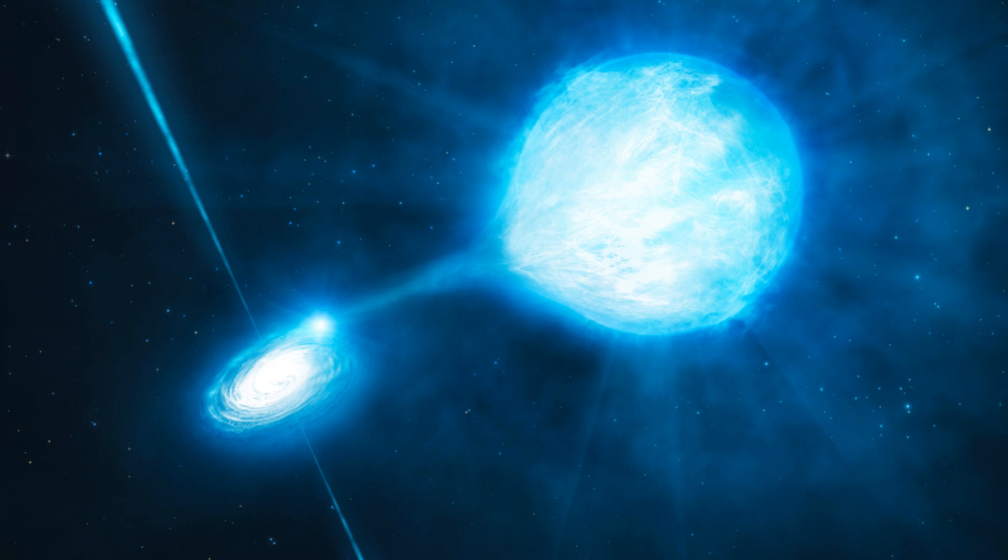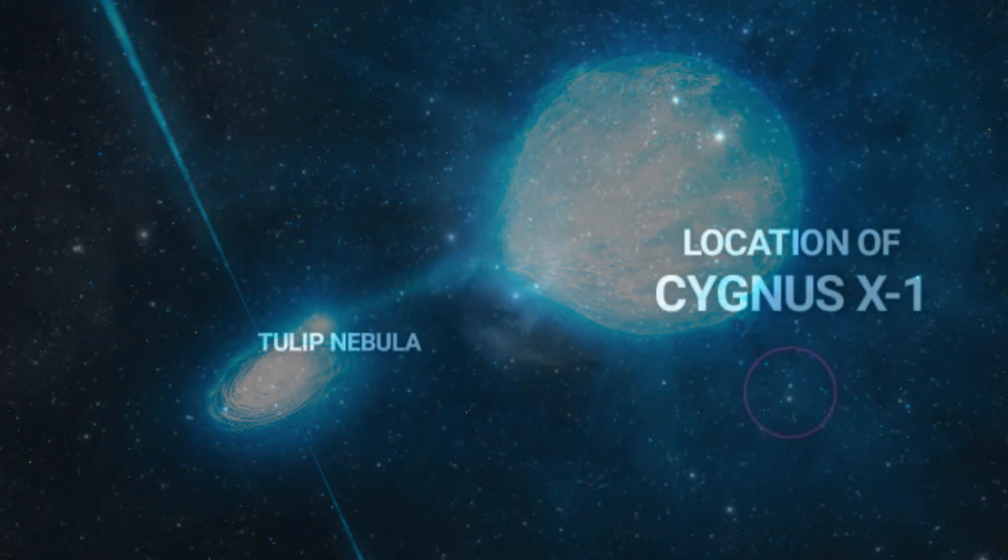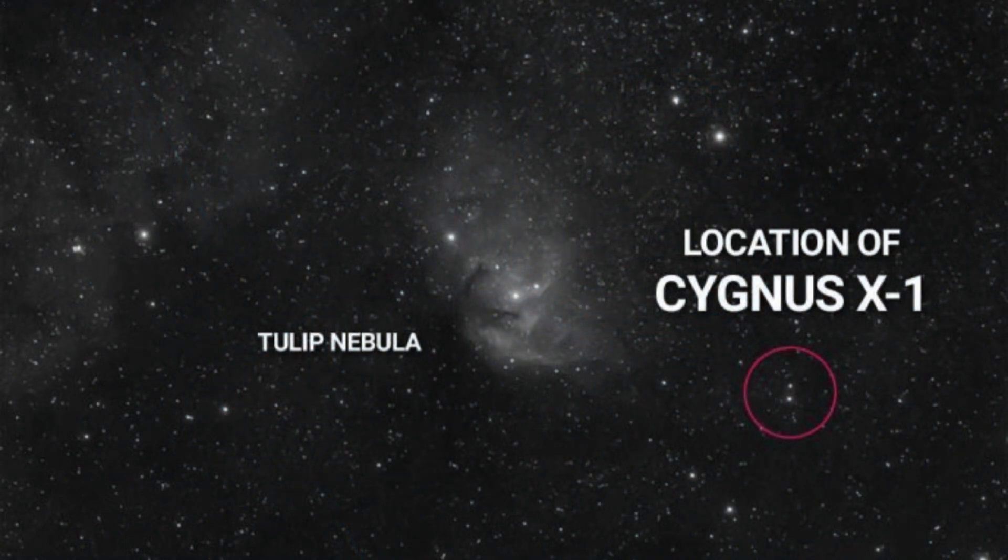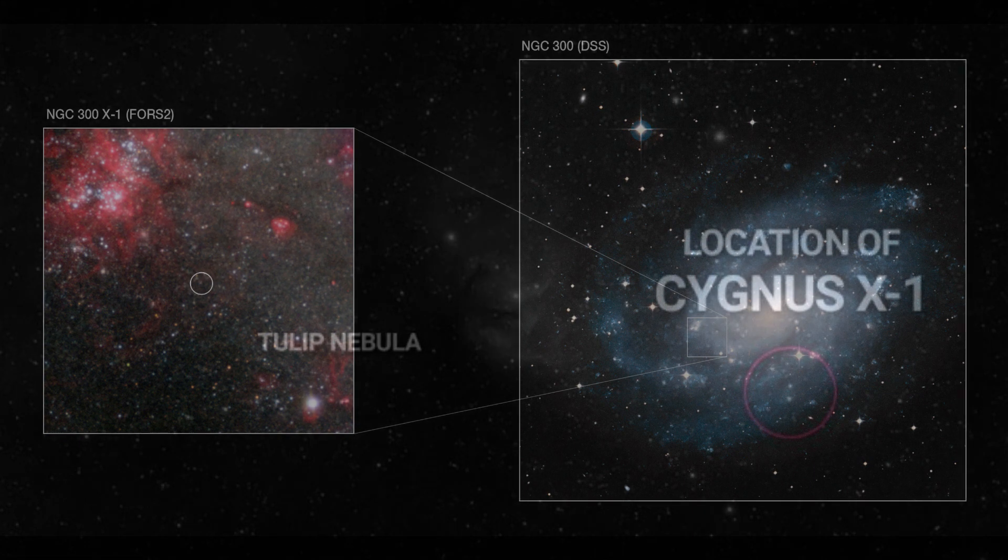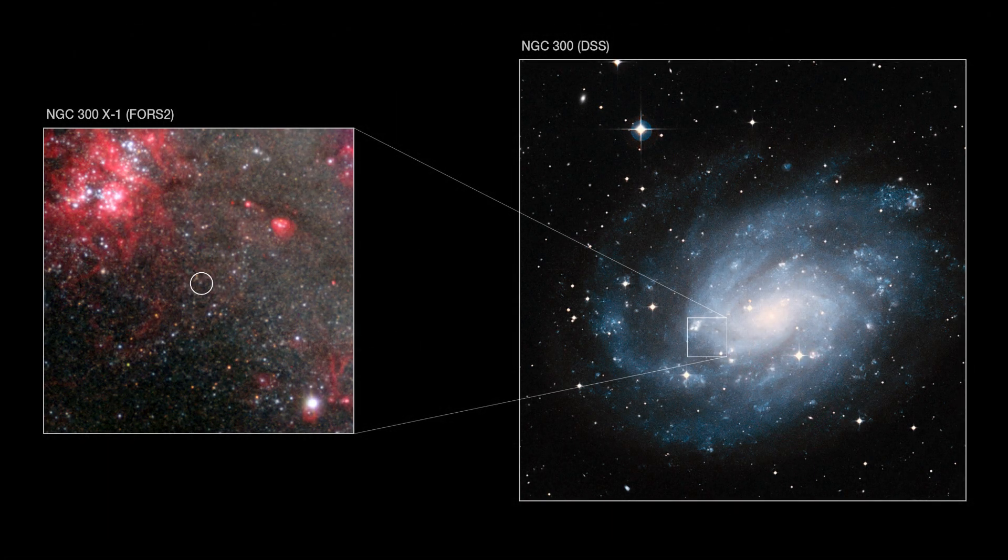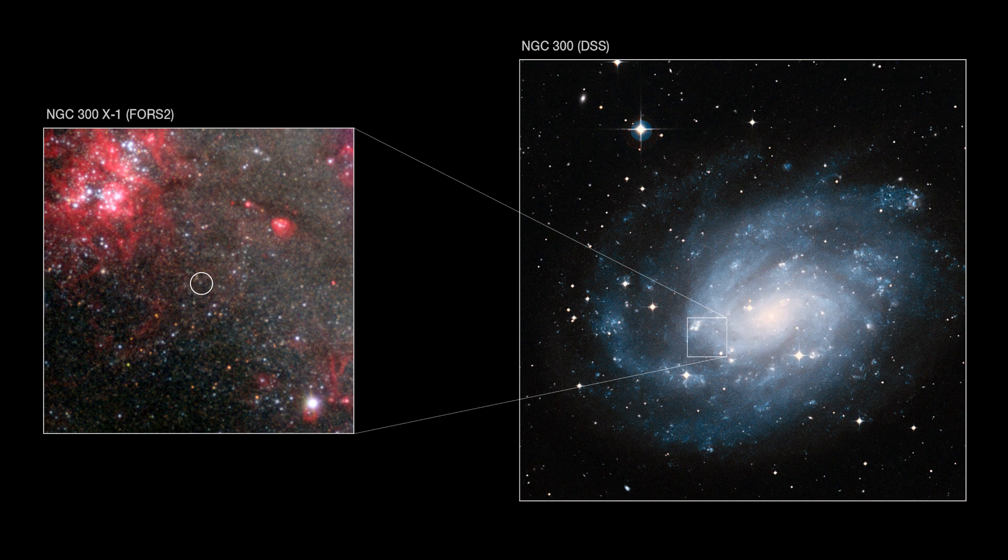Examples of stellar mass black holes include Cygnus X-1, with a diameter of 90 kilometers, at 6,000 to 10,000 light years away in the constellation Cygnus, with roughly the mass of 15 solar masses, and NGC 300 X-1, with a diameter of about 75 kilometers, at 6 million light years away in the galaxy NGC 300, in the constellation Sculptor, roughly the mass of 15 solar masses.